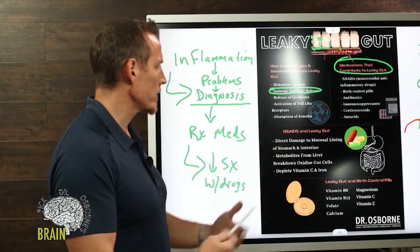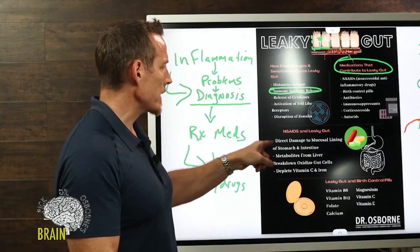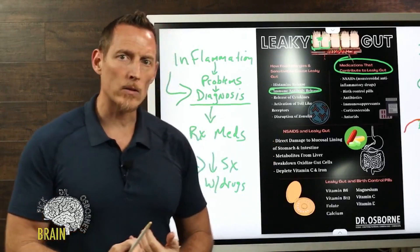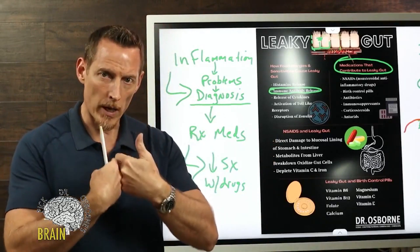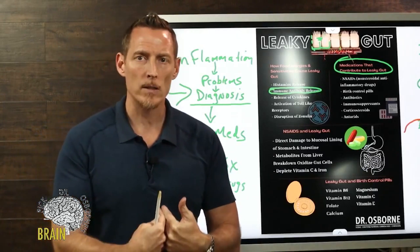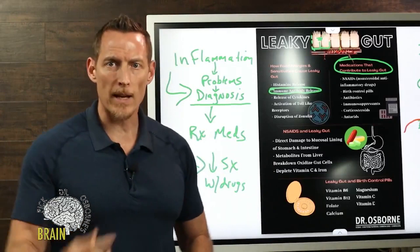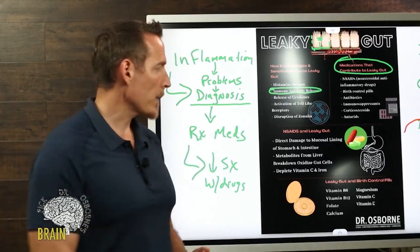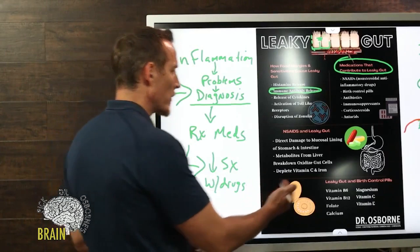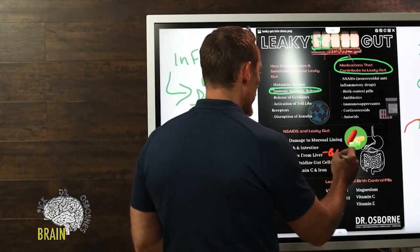Once you metabolize NSAIDs, something else happens — a double hit. The drug directly impacts and damages the mucosal lining just by being physically present in the stomach and intestine. But then the drug goes into your blood and is metabolized by your liver.